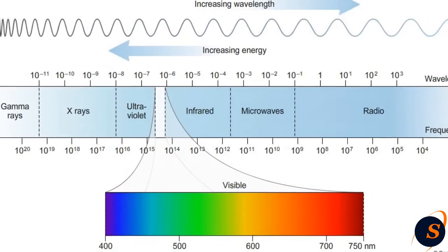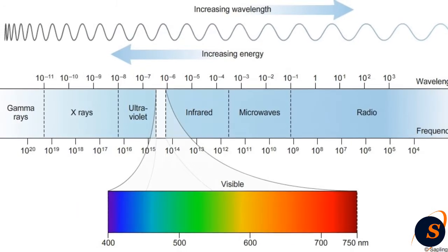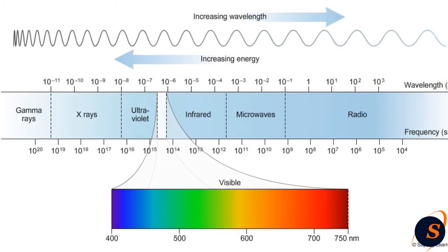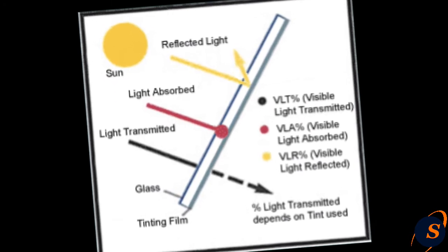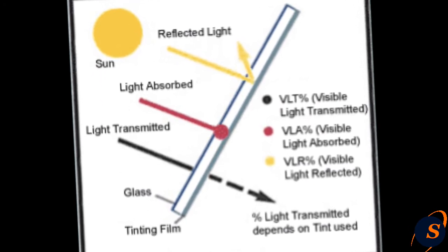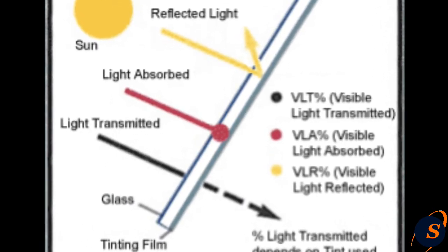Different materials can have one of three effects on electromagnetic waves at different frequencies. First, they can absorb the waves. Second, they can alter the direction of the wave. And third, they can allow the wave to pass through without any change.